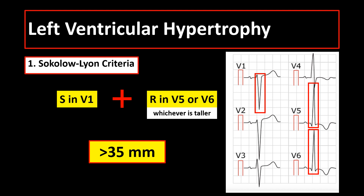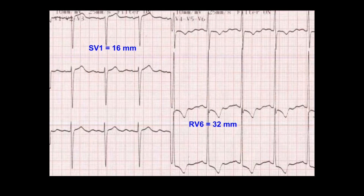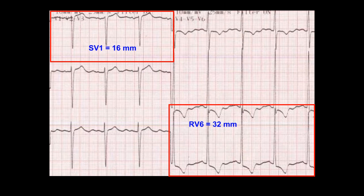For example, in this case, the S or negative deflection in V1 is 16 millimeters, while the R or positive deflection in V6 is 32 millimeters, with a total of 48 millimeters. So this is left ventricular hypertrophy by Sokolow-Lyon criteria.